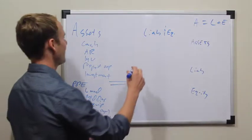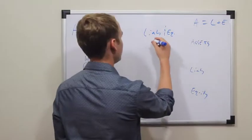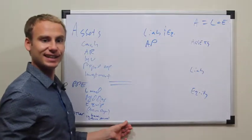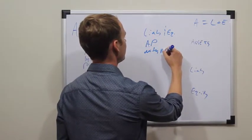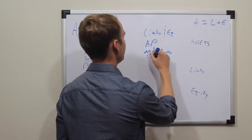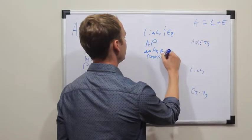On the liability side, we have our number one liability, accounts payable, bills, things are stacking up, notes payable. This is sort of a general debt, credit lines, things like that.